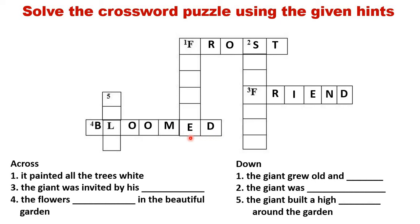Well done, children. We have solved across. Now we will solve down. Let's read part one: the giant grew old and blank. Do you remember? Yes, he grew old and feeble. Very good. Do you remember the meaning of feeble? Yes, it means weak. The spellings are F-E-E-B-L-E. F and the last E are already given; you will fill in the rest of the letters, so quickly do it.